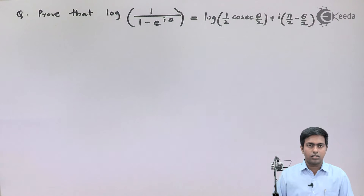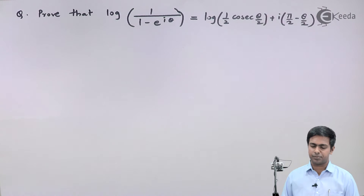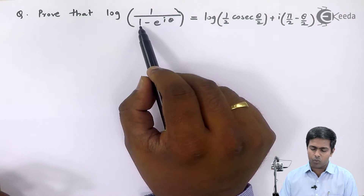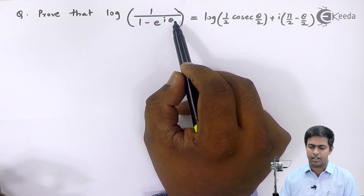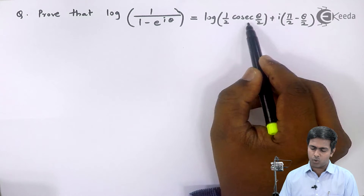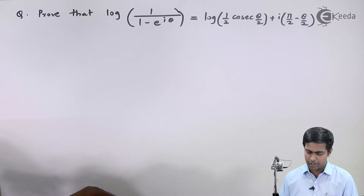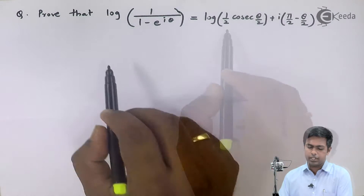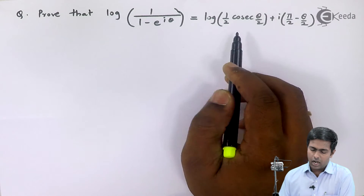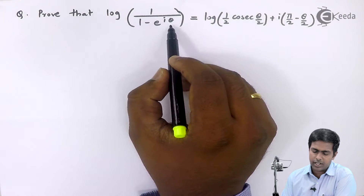In this video we are going to see a problem based on logarithm of a complex number. We have to prove that log of 1 upon 1 minus e raised to i-theta is equal to log of 1 by 2 cosec(θ/2) plus i(π/2 minus θ/2). To prove this, I will start with the left-hand side: log of 1 upon 1 minus e raised to i-theta.